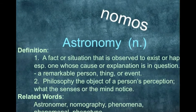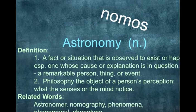Number seven is nomos. Nomos means law, science, and management. Astronomy is the science of studying the universe. The related word nomography is a book related to law. The word phenomenon is a fact or situation that has happened.